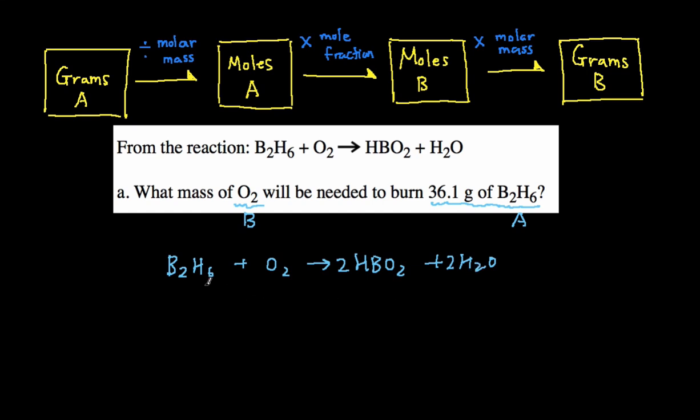So that's the first step: balance the chemical equation. Now we can use this flowchart and help us with the stoichiometry, with the conversion. So we're going to start with grams of A, the grams of the given, and that's 36.1 grams of B2H6.